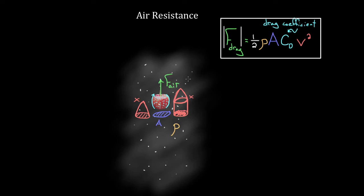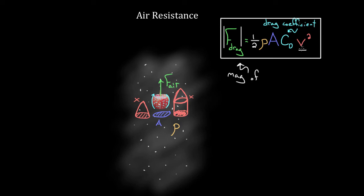So we put absolute value signs here, so that we know we're always going to get a positive number out of this. It's up to us to determine whether this should be positive or negative, depending on whether that air resistance points up or down or right or left. If you choose up as positive and you've thrown an object upward, it would have air resistance downward — we'd have to supply a negative to this expression. This is only giving you the magnitude. That's one reason it's kind of a pain, but there's a much bigger reason — and that's this speed squared, which makes the calculus you try to solve with this a lot harder to deal with. This formula's kind of a drag.